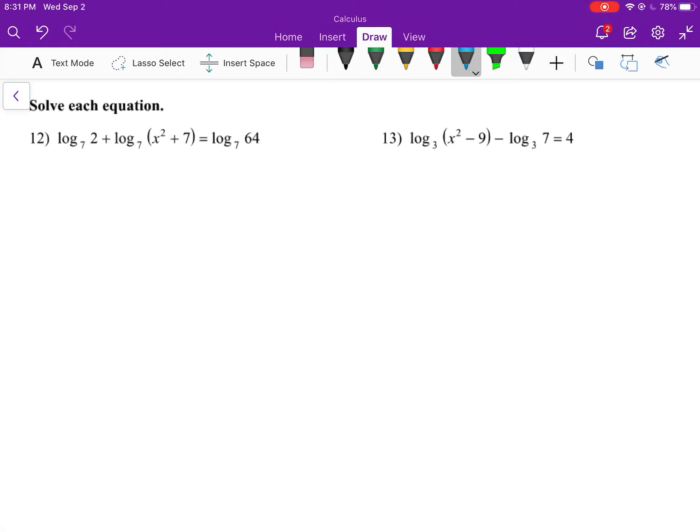Numbers 12 and 13 have logarithms, but they're actually two different structures. If you look at number 12, it has log base 7 of something plus log base 7 of something equals log base 7 of something. There's a logarithm on both sides of the equation - in fact, there's a logarithm in each term.